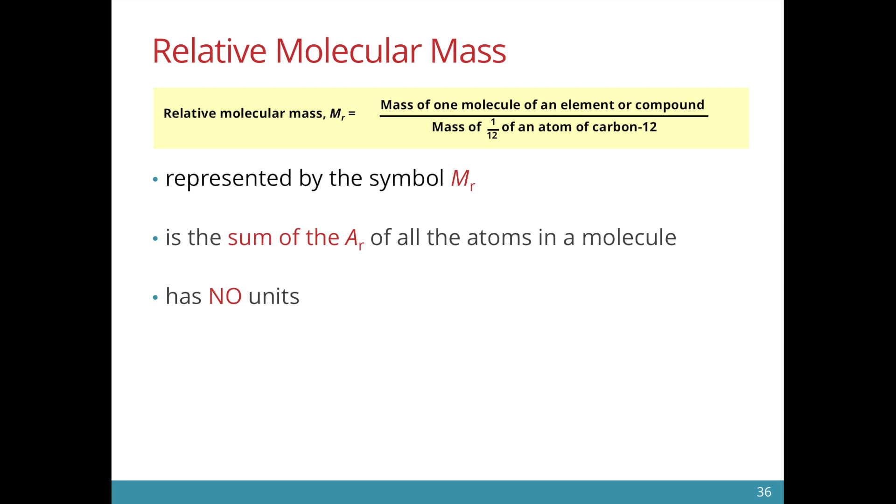The relative molecular mass has a symbol MR while the relative atomic mass has the symbol AR. The relative molecular mass is taken by adding up all the AR of the atoms in the molecule and it doesn't have a unit.